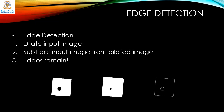We can use the dilation concept to detect edges. The first step is to dilate the input image, then subtract the input image from the dilated image — only the edges will remain. Here is the input image, the dilated image, and subtracting these two shows you the edges.